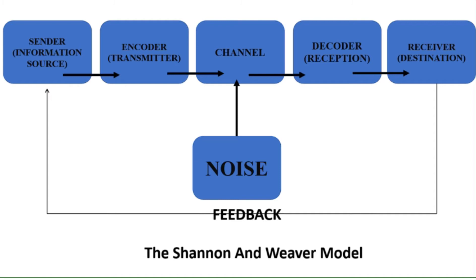The next step in the Shannon-Weaver model is noise. Noise interrupts a message while it is on the way from the sender to the receiver. It is named after the idea that noise could interrupt our understanding of a message. There are two types of noise: internal and external. Internal noise happens when a sender makes a mistake encoding a message, or a receiver makes a mistake decoding the message. It can happen at the point of encoding — for example, when you misspell a word in a text message — or at the point of decoding — for example, when someone misinterprets a sentence when reading an email.